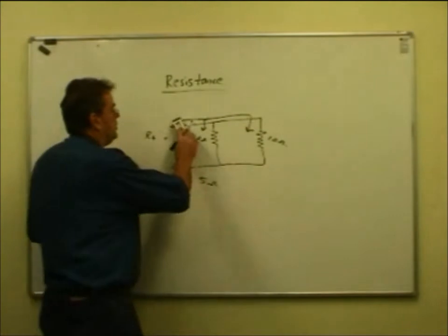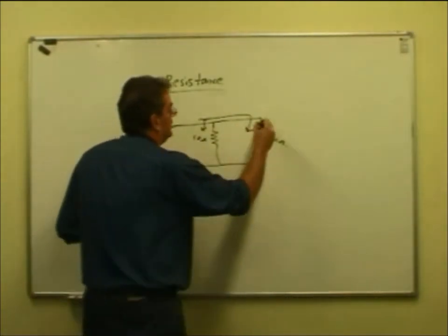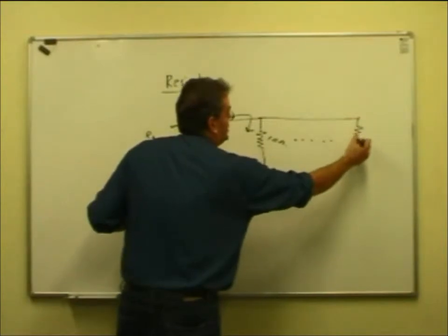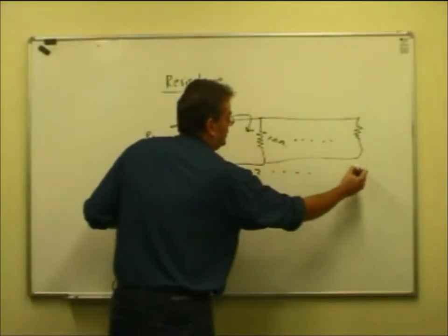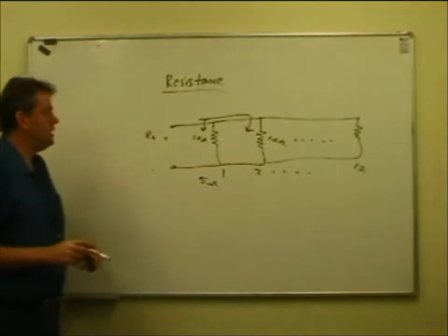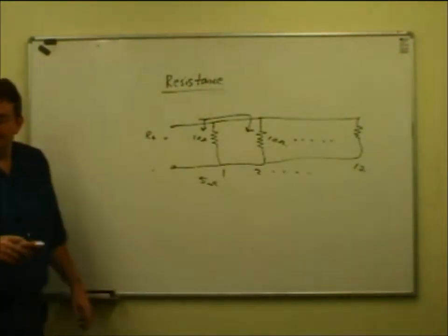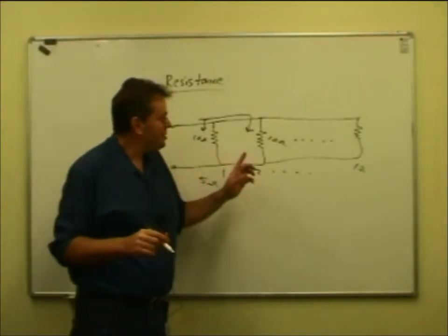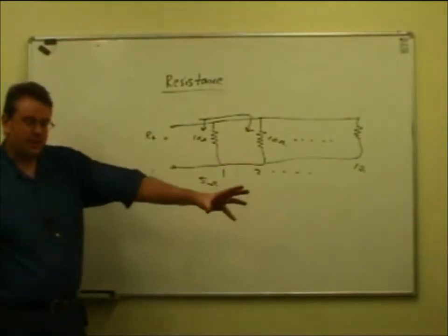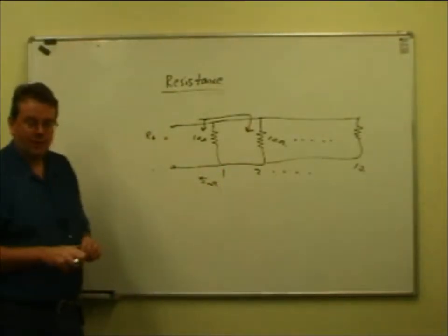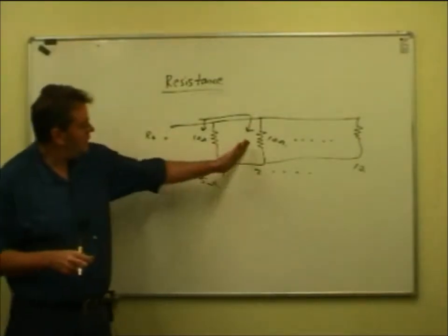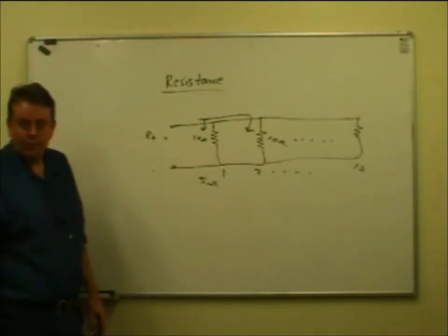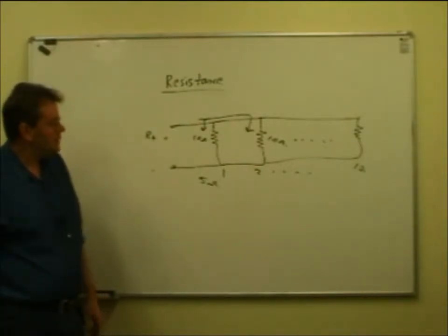Imagine there are 10 resistors - the question was, what if you've got 10 ten-ohm resistors? It's 1 ohm. Joshua said 1. If all the resistors are the same, you just divide the individual resistor value by that number. So if you've got 5 resistors of the same value, it's 1 fifth of each one on its own. If you've got 10, it's 1 tenth.